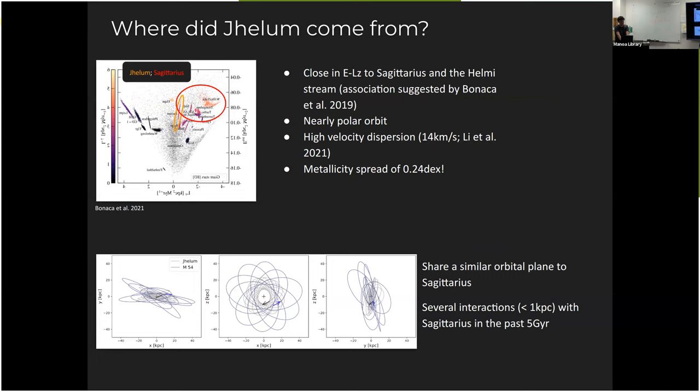So when we look at Jhelum a little bit closer, again, going to the Lz energy, the integral of motion space, you see that Jhelum is this orange circle here, ellipse really. And the red circle is the location of the Sagittarius dwarf galaxy.